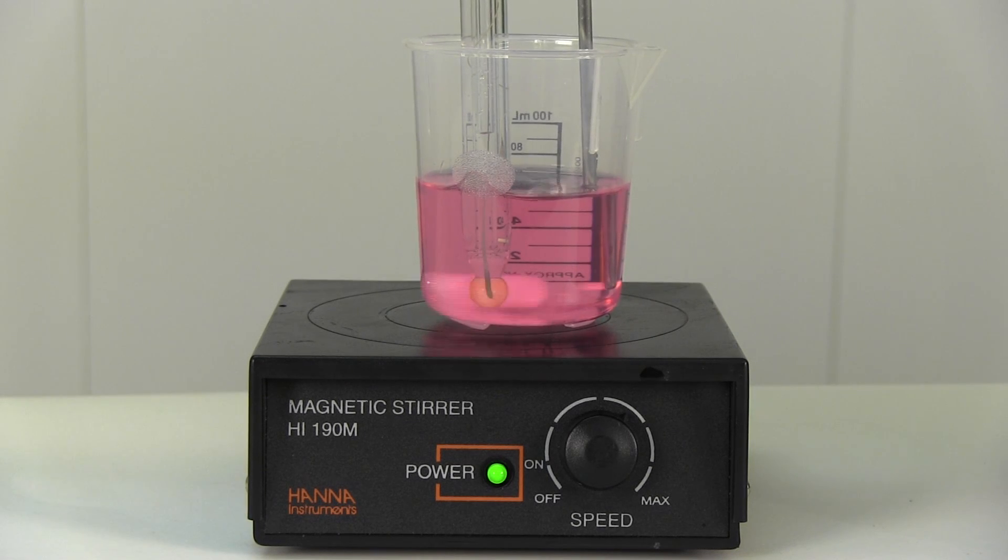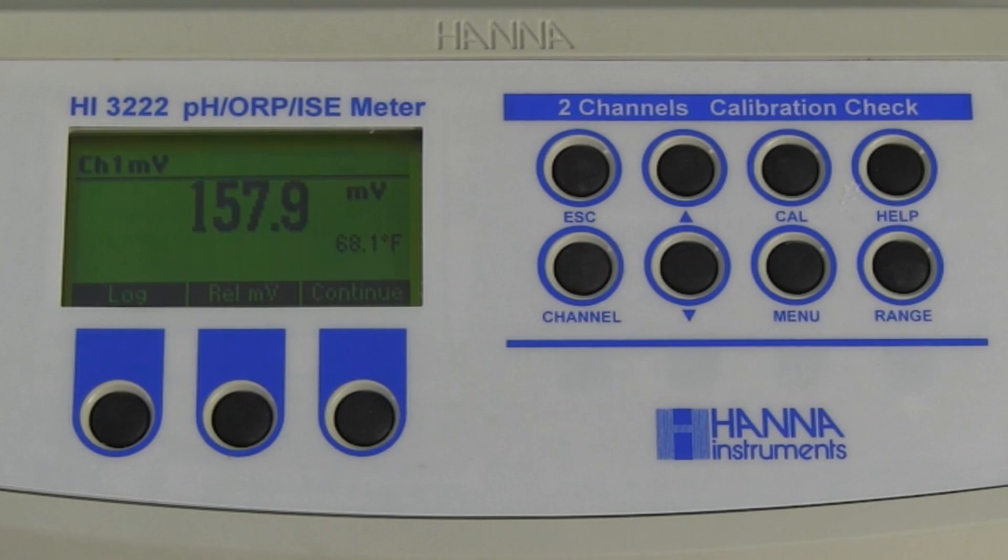In this case, we will use pH 4 buffer, however any other buffer can be used. Our second millivolt value using a pH 4 buffer is 157.9 millivolt.